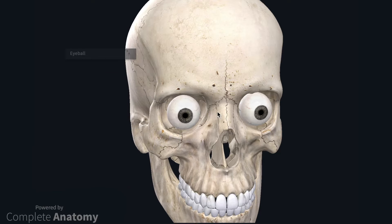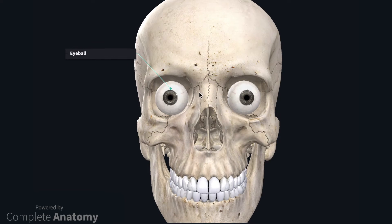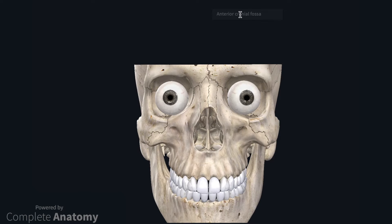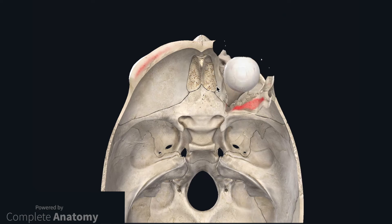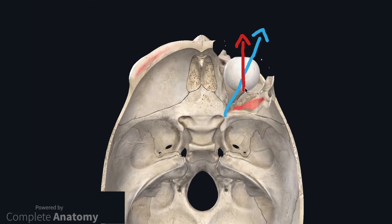The eyes face anteriorly. The significance of this cannot be appreciated until we remove the calvaria and look at the orbit from a superior view with the roof of the orbit removed. The red arrow demonstrates where the eyeball faces, and the blue arrow demonstrates the long axis of the orbit. Therefore the muscles have a resting muscle tone to stabilise the position of the eye, and the coordinated contraction and simultaneous relaxation of the extraocular muscles result in movements of the eyeball.